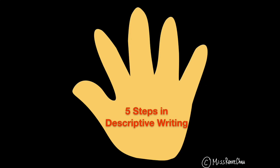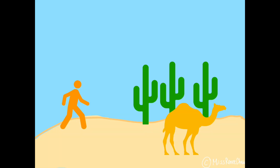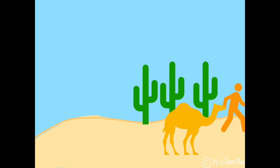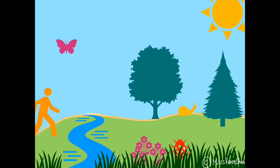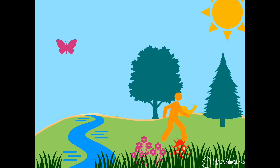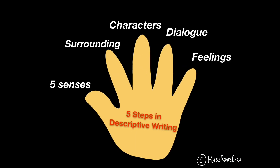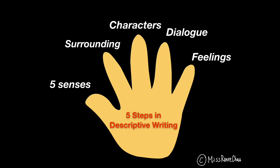There are five steps in descriptive writing. Have you ever read a story without any descriptive elements? You'll find it boring, like walking in a desert. But if you add description to your story, it will become a lovely forest with trees and flowers. So here come the five steps.